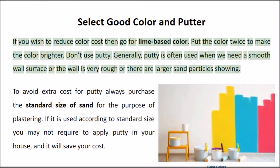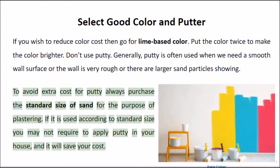The tenth tip is saving on paint and putty. If you want to reduce the cost, go for lime-based color and put the color on twice to make it brighter. Don't use putty. Putty is often used when the wall surface is rough or has larger sand particles showing. To avoid the extra cost of putty, always purchase standard-size sand for plastering. If standard-size sand is used, you may not require putty, and it will save your cost.